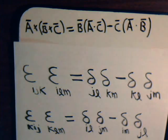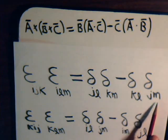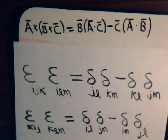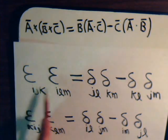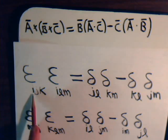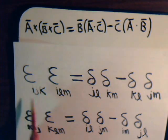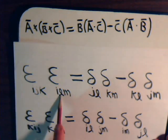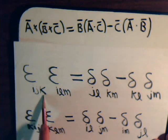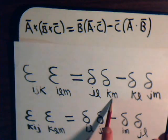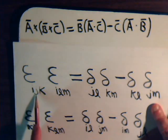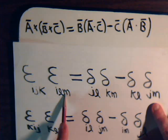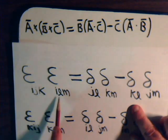One thing that we pointed out, I think it was in video number 9, was the pattern of this identity. Here we have epsilon, epsilon, and the first index is matched, and all others are different. This equals inner, inner, outer, outer, minus inner, outer, outer, inner.